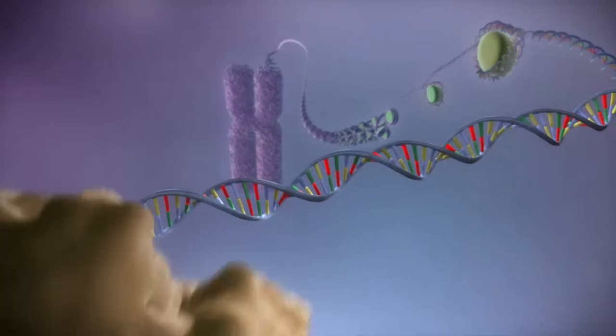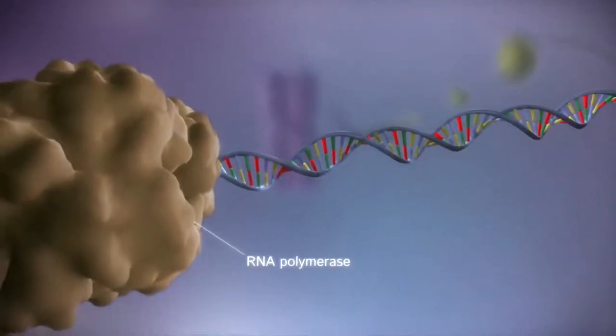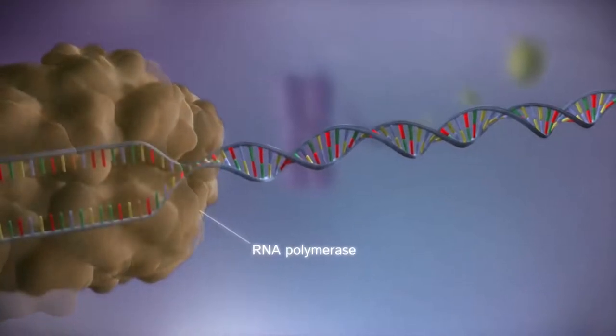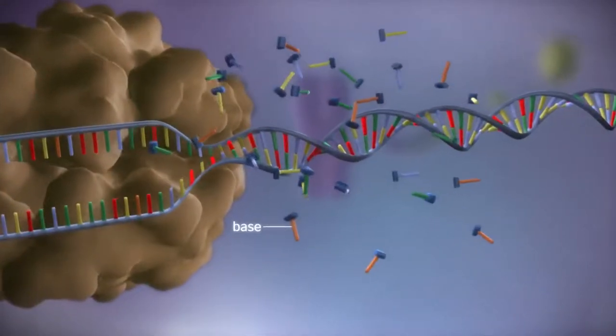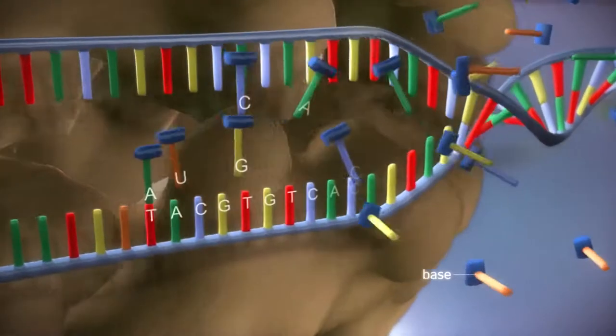When a gene is switched on, an enzyme called RNA polymerase attaches to the start of the gene. It moves along the DNA, making a strand of messenger RNA out of free bases in the nucleus.